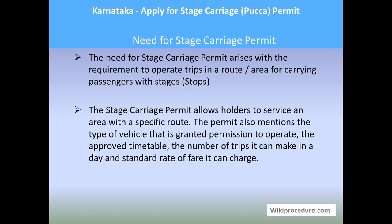The need for a stage carriage permit arises with the requirement to operate trips on a route or area for carrying passengers at stages, that is, stops. The permit allows the holder to service an area with a specific route, and also mentions the type of vehicle granted permission to operate — which can be a mini bus, a bus with AC facility, and so on — along with the approved timetable, the number of trips it can make in a day, and the standard rate of fare it can charge passengers.